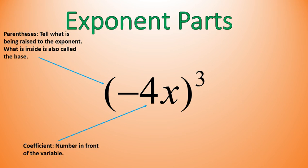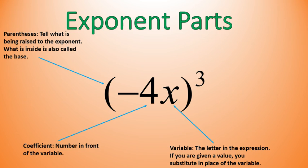There is a coefficient, which is a number in front of the variable. There's a variable, that's the letter in the expression. And if you're given a value to substitute, which we will during the course of this lesson, you would substitute the value in place for that variable. And then there's our exponent, which indicates how many times you're multiplying the base times itself.